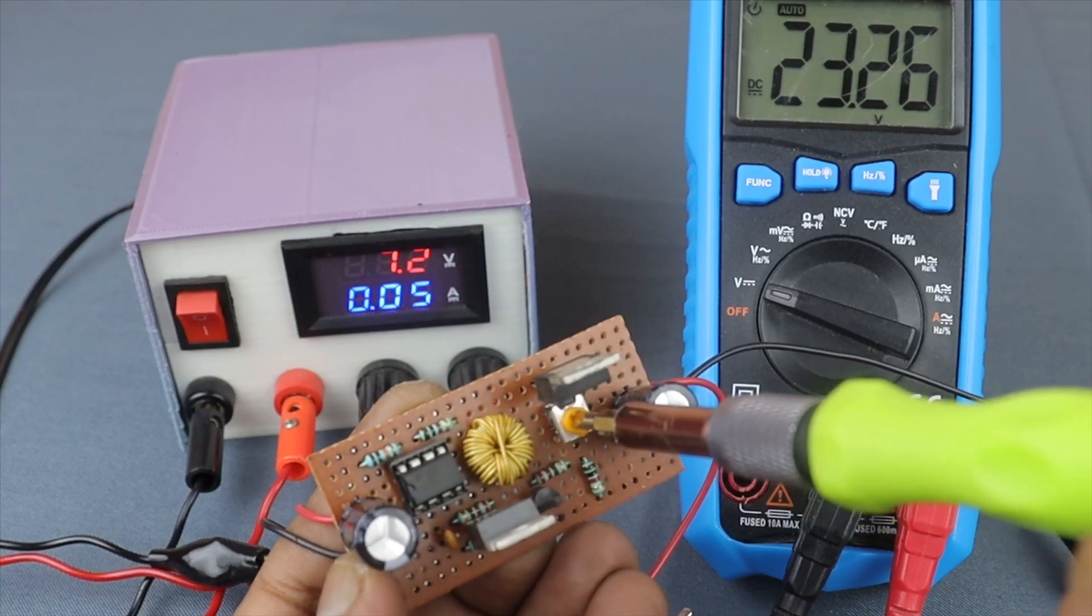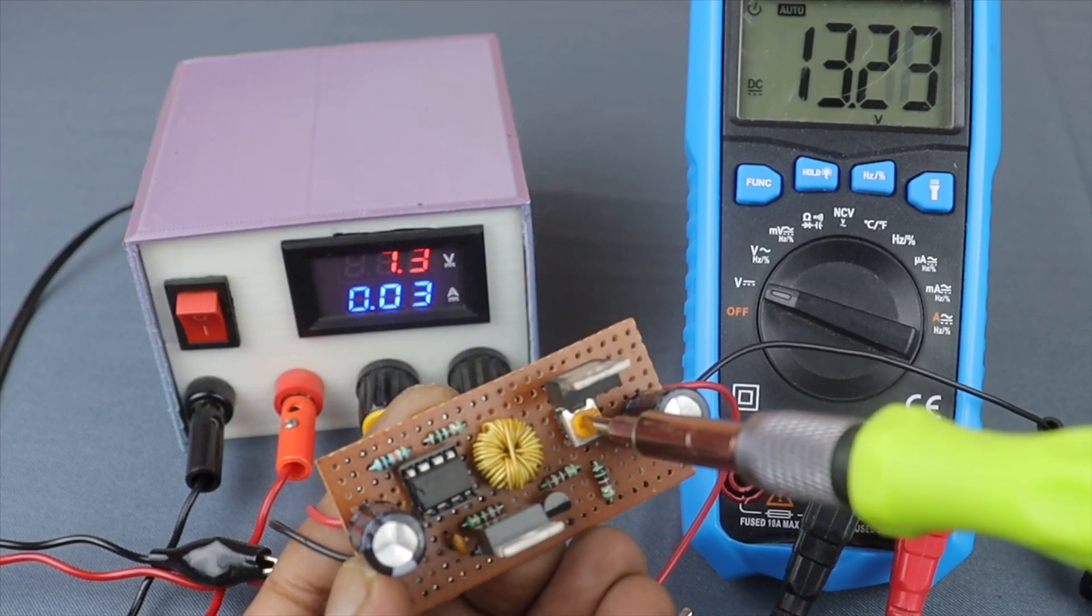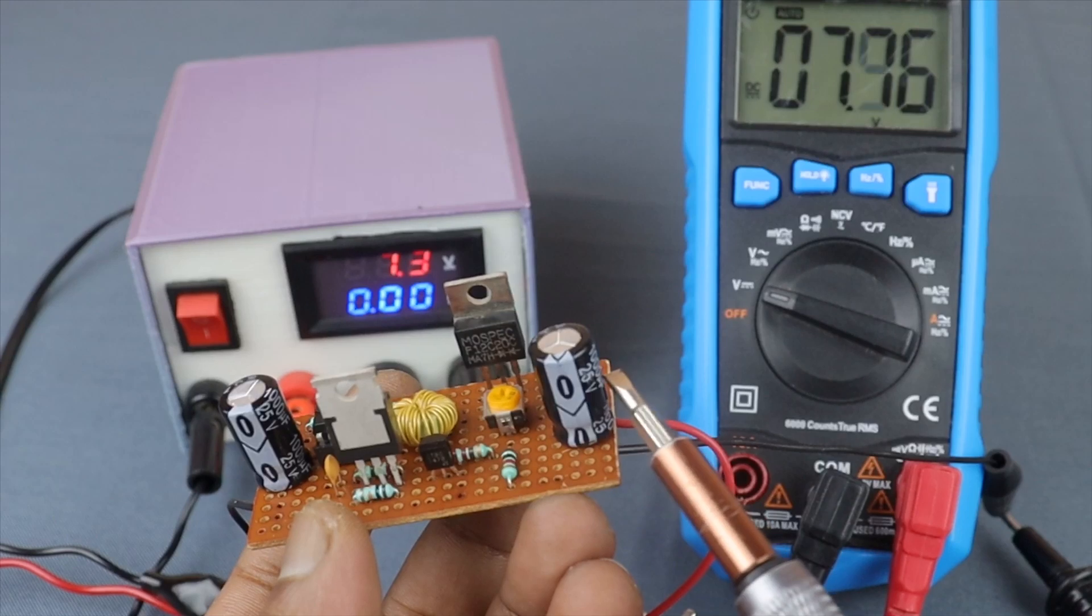We can get 25V but we can't go over this because the output capacitor is rated 25V. Let's change this capacitor with a higher voltage rating.